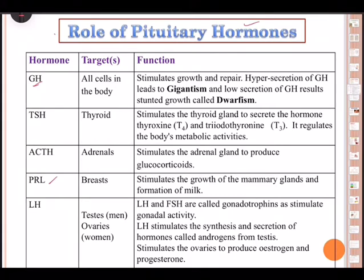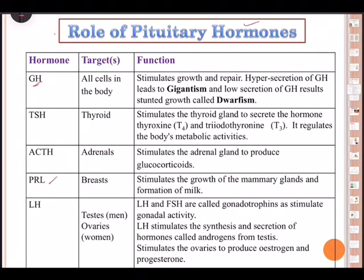These hormones reach the pituitary gland through a portal circulatory system and regulate hormones secreted by the anterior pituitary and middle pituitary. The posterior lobe of the pituitary does not secrete any hormone — remember this. Its hormones are actually secreted in the hypothalamus.